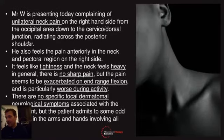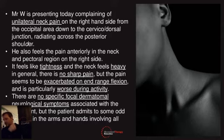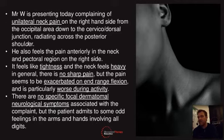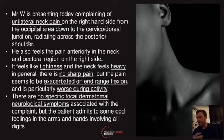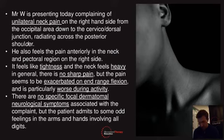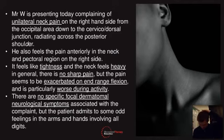With those anatomy structures in mind — this is what I'd do when someone comes in with neck pain: imagine taking off the skin and thinking about what's underneath. Mr. W is presenting with unilateral neck pain on the right, from the occipital area at the base of the skull down to the cervicothoracic junction at C7-T1, radiating across the posterior shoulder. So already we're thinking about those muscles. It feels like tightness; his neck feels heavy; no sharp pain. Pain is exacerbated on end-range flexion.